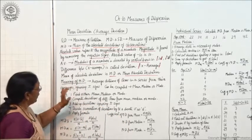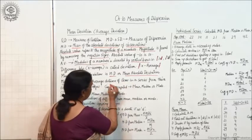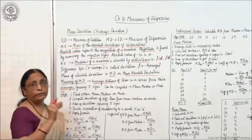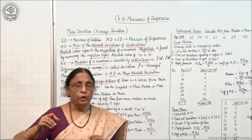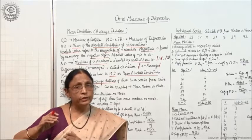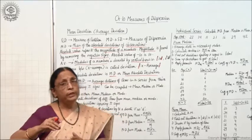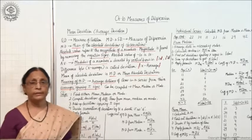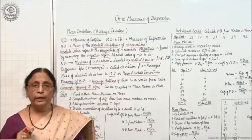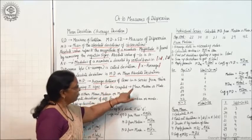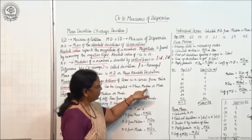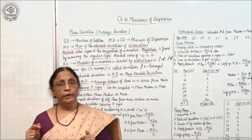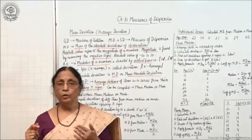Mean deviation can be defined as the average distance of items in a series from their averages — whatever the actual average is: mean, median, or mode. The main feature is ignoring plus and minus signs so all values are absolute values. It can be computed using any of the three averages: mean, median, or mode.